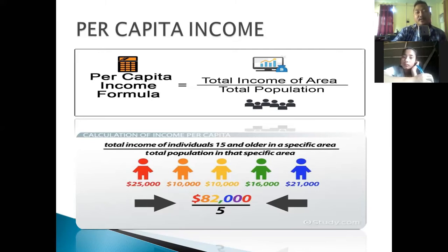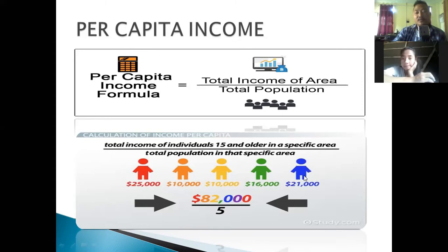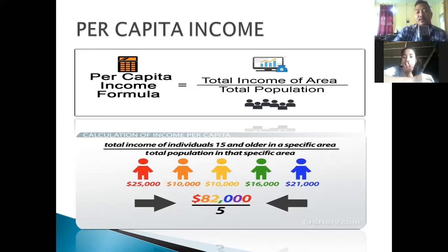From the picture, you can understand what per capita income means. Let's say there are five individuals — the first one earns 25,000 rupees, then 10,000, 10,000, 16,000, and the last earns 21,000. Their total income is 82,000 rupees. If you divide by 5, the answer will be the per capita income.